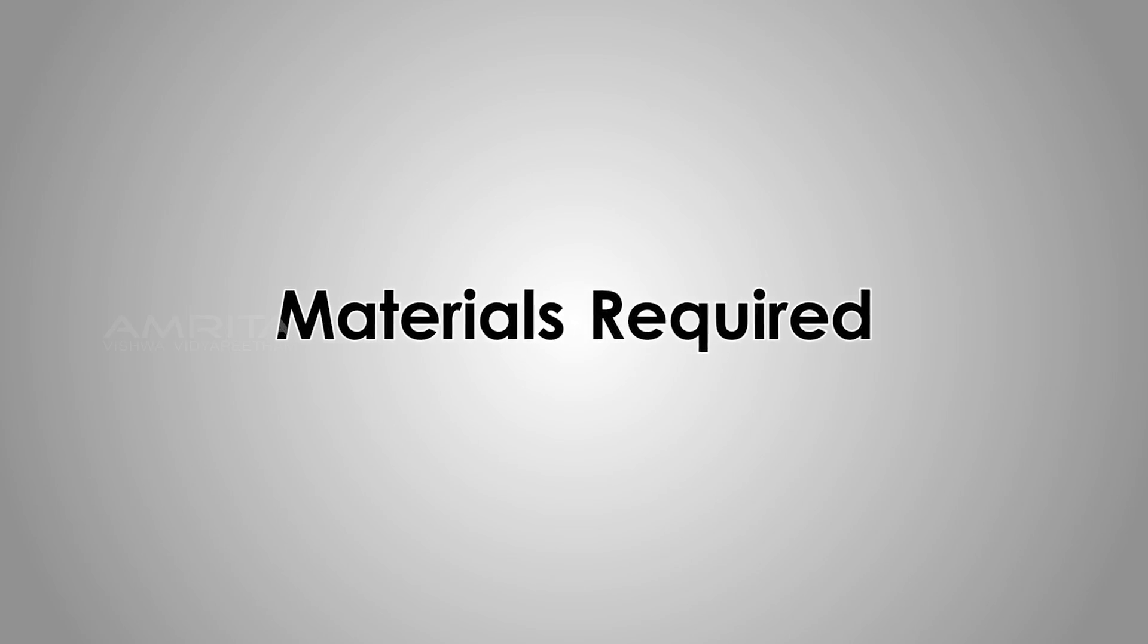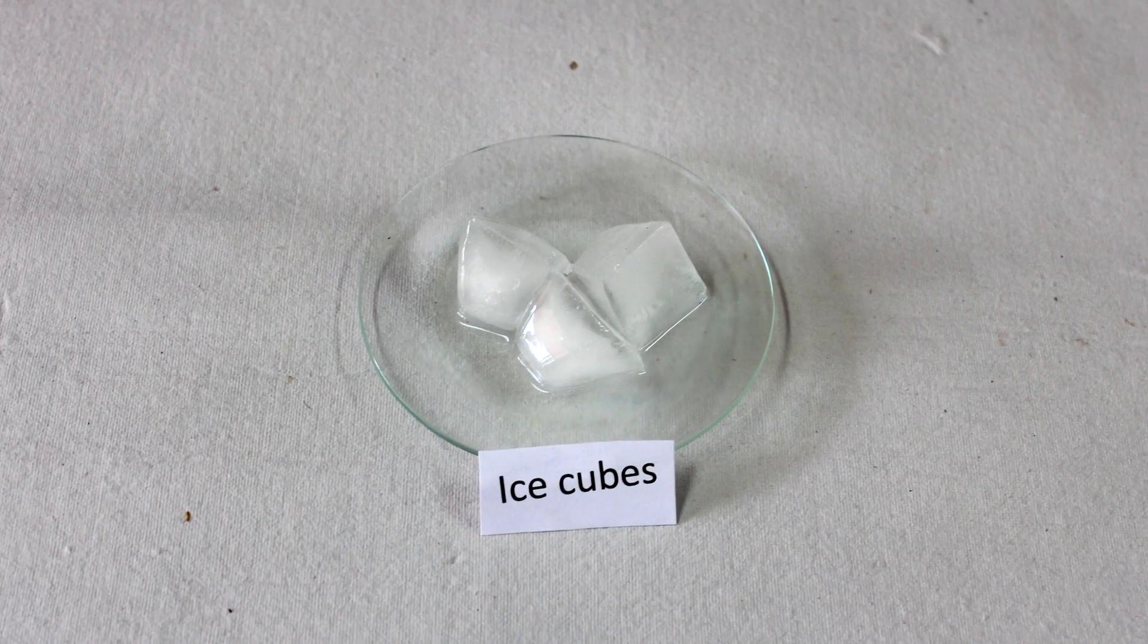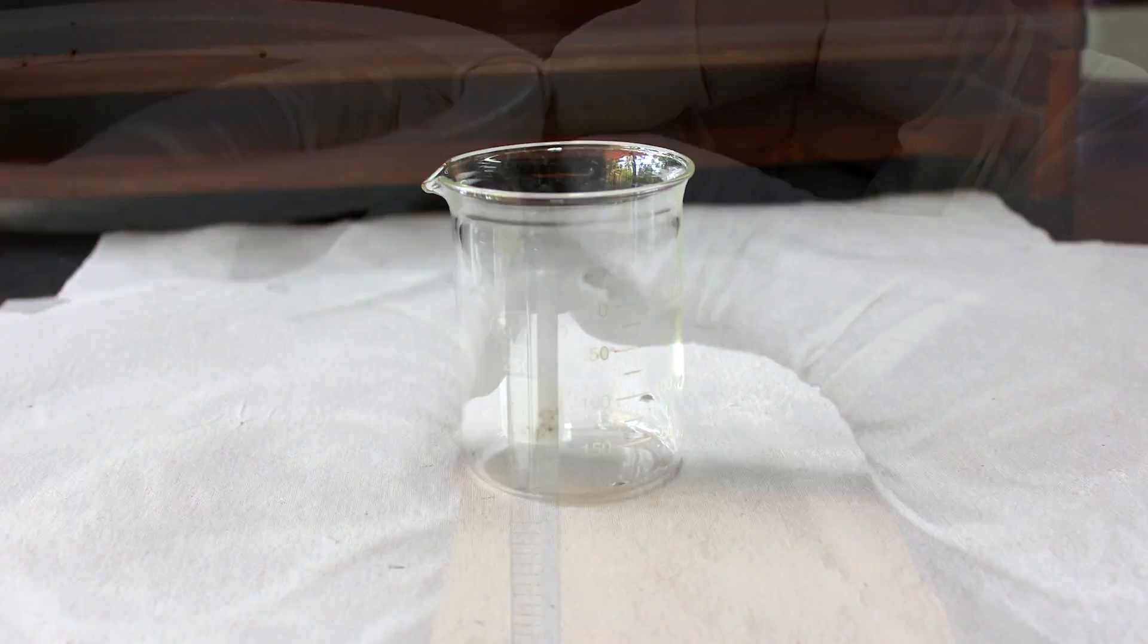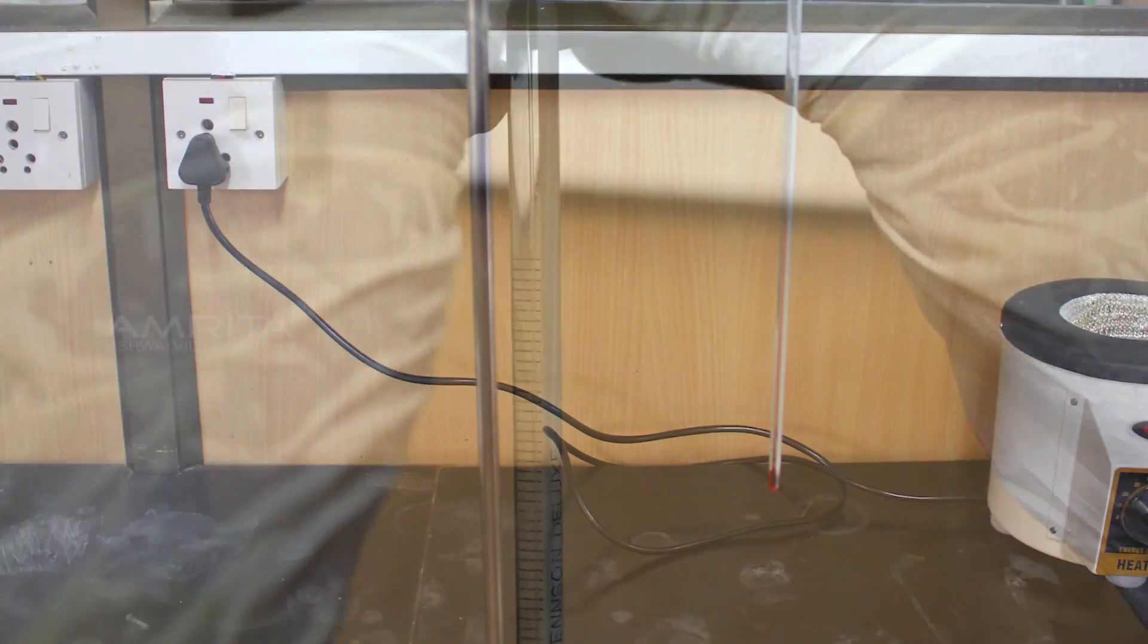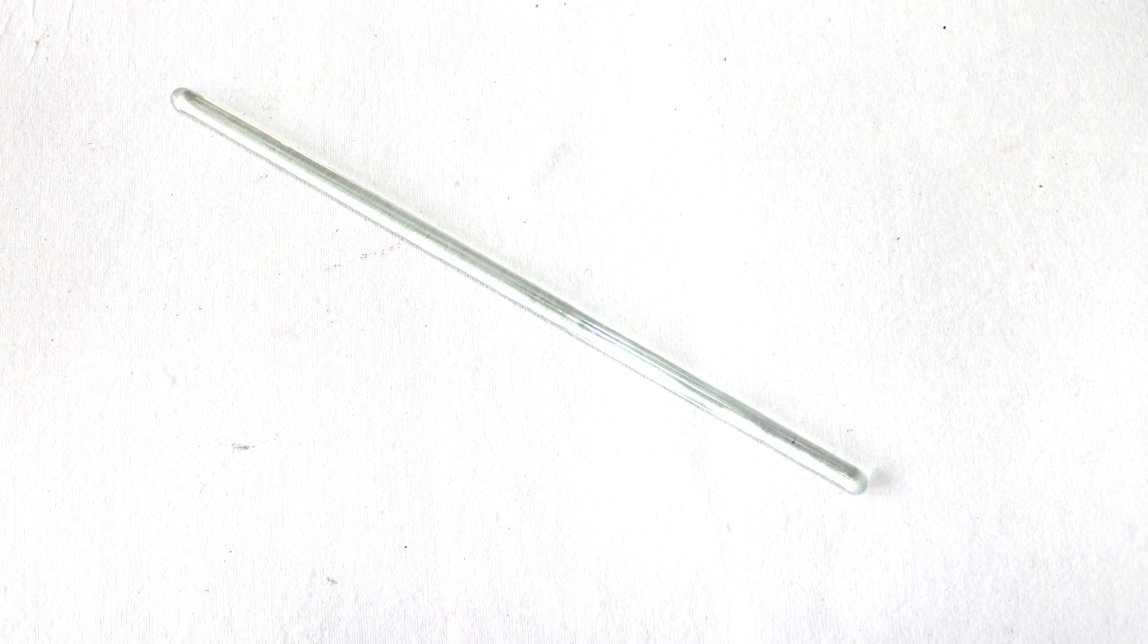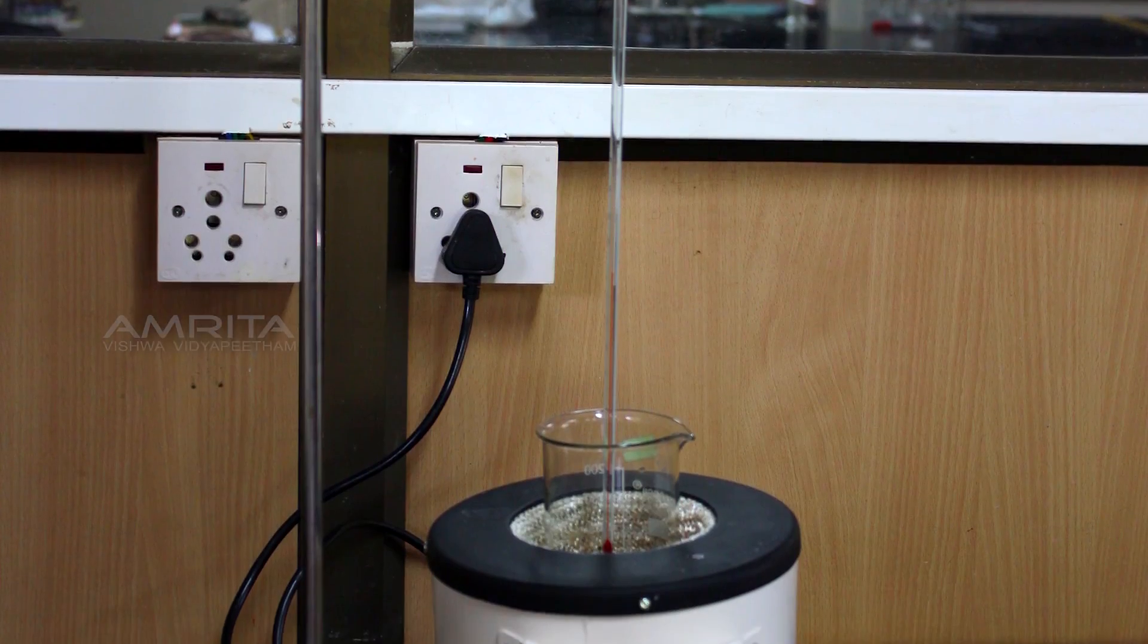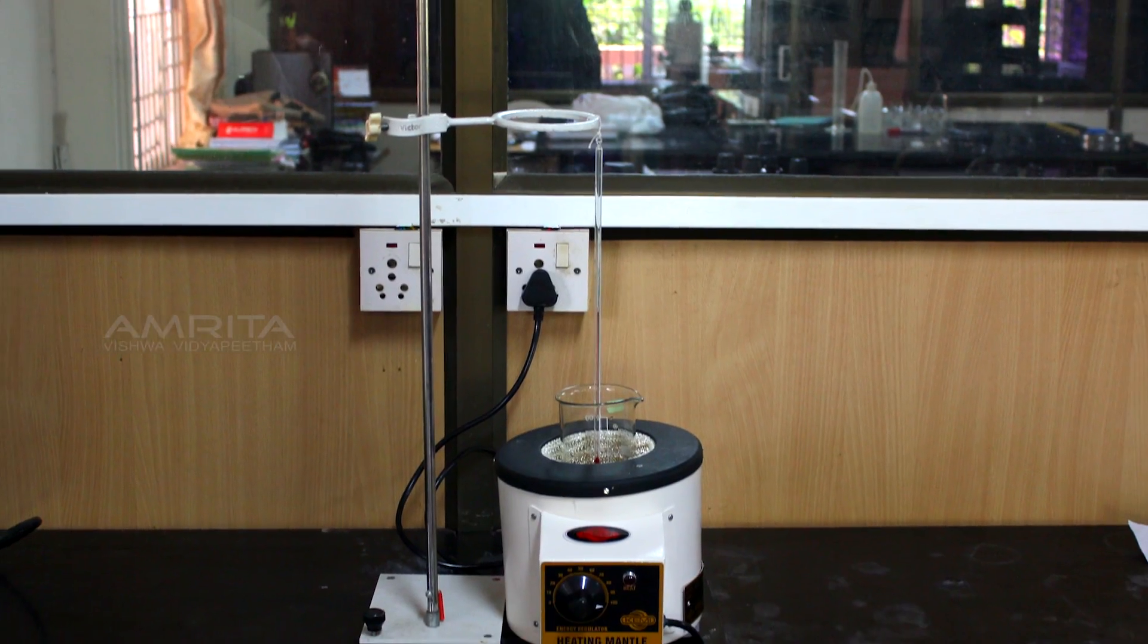Materials Required: Ice cubes, 250 ml beaker, thermometer suspended in a stand, glass rod, and a heating mantle which is used to control temperature and to get uniform heating.